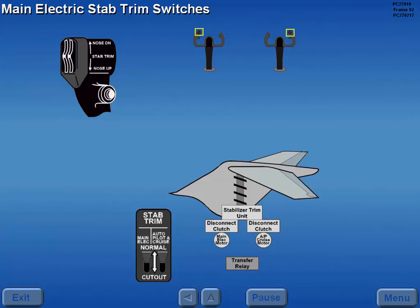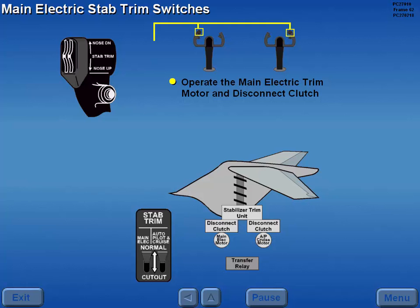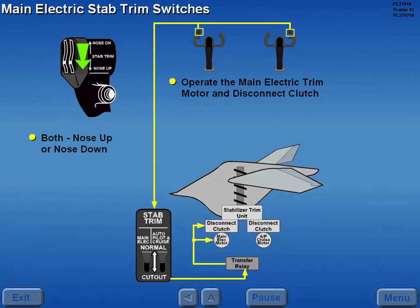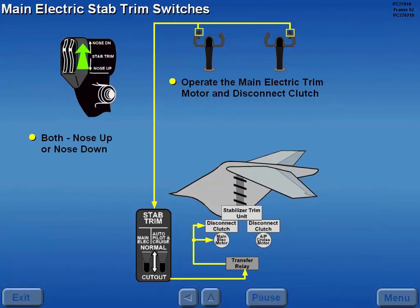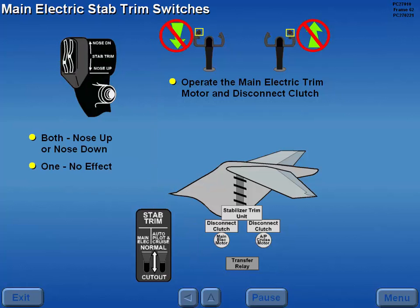Two-part main electric stabilizer trim switches operate the main electric trim motor and a disconnect clutch. Moving both switches positions the stabilizer nose up or nose down. Operating either switch individually causes no action. The captain's and first officer's trim switches should not be operated simultaneously in opposite directions.